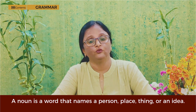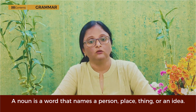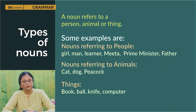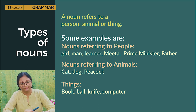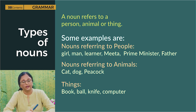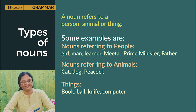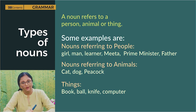A noun refers to a person, animal or thing. Some examples are nouns referring to people: girl, man, learner, Meeta, prime minister, father. Nouns referring to animals: cat, dog, peacock, bird, crocodile, fish. Nouns referring to things: book, pen, ball, knife, computer.